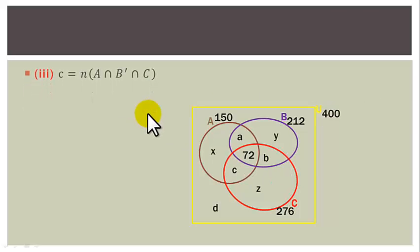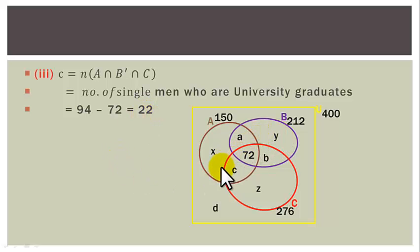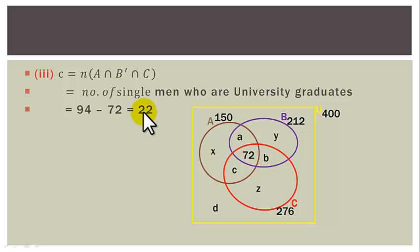Question 3: Region C (A∩C outside B) represents single men who are university graduates. This equals |A∩C| − 72 = 94 − 72 = 22.